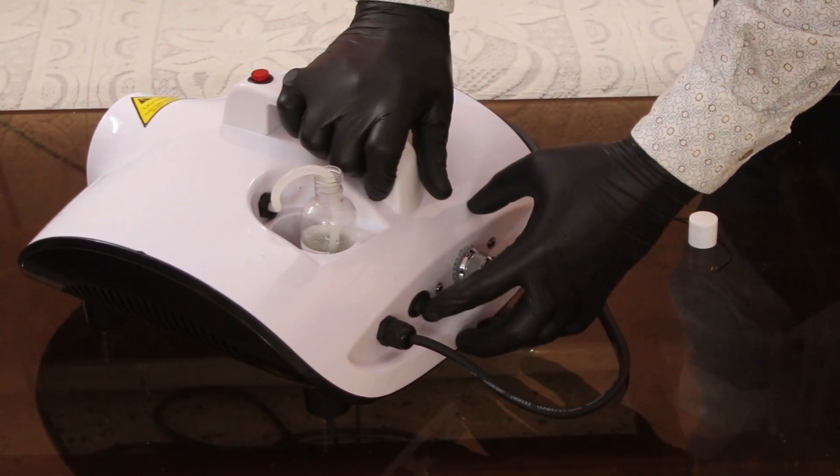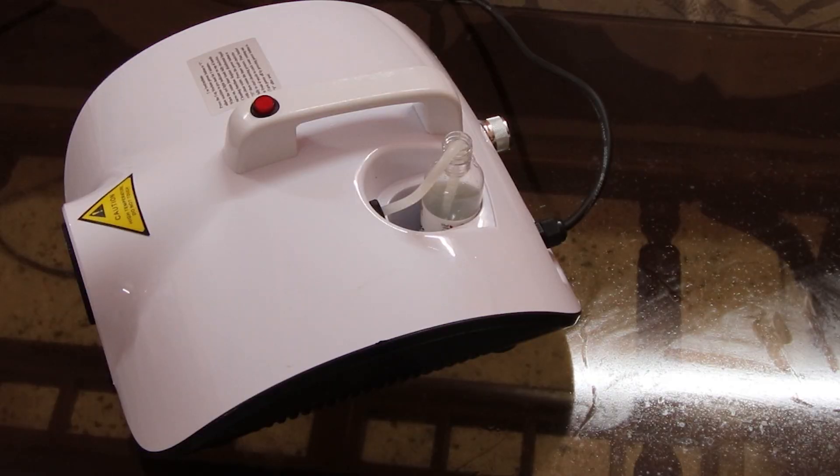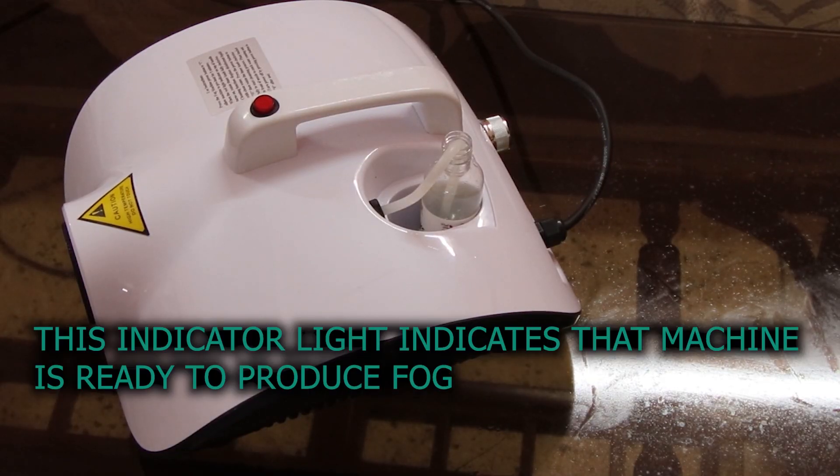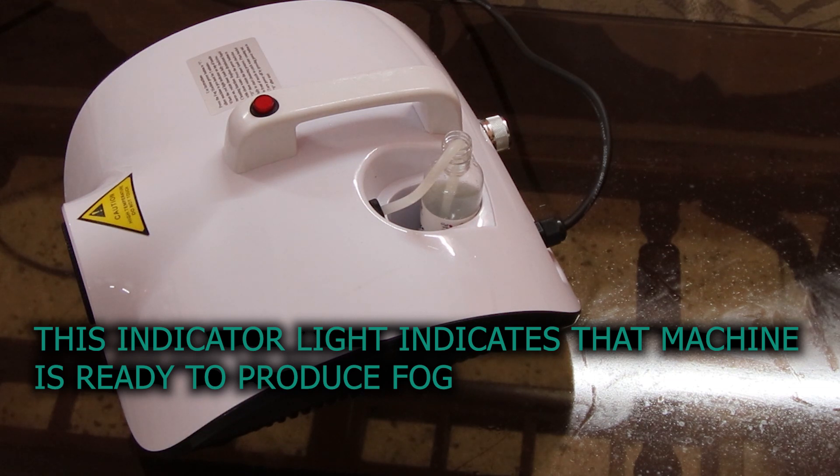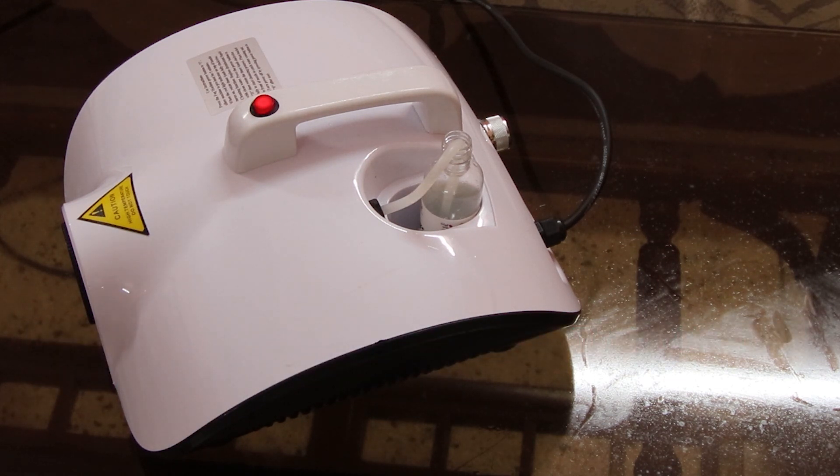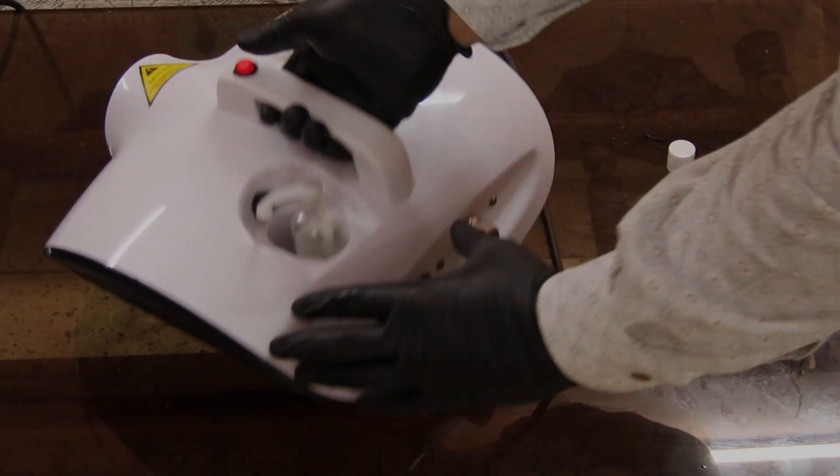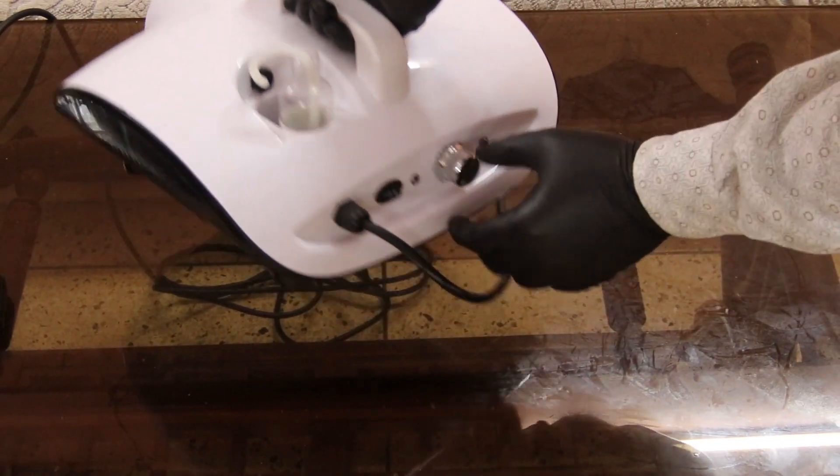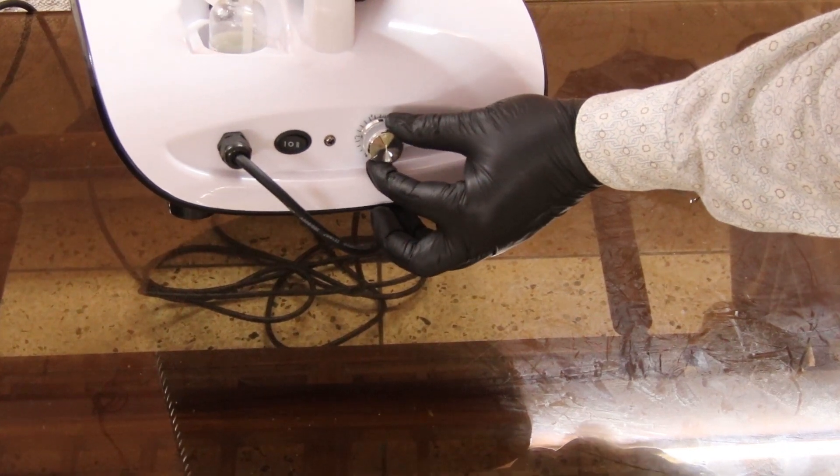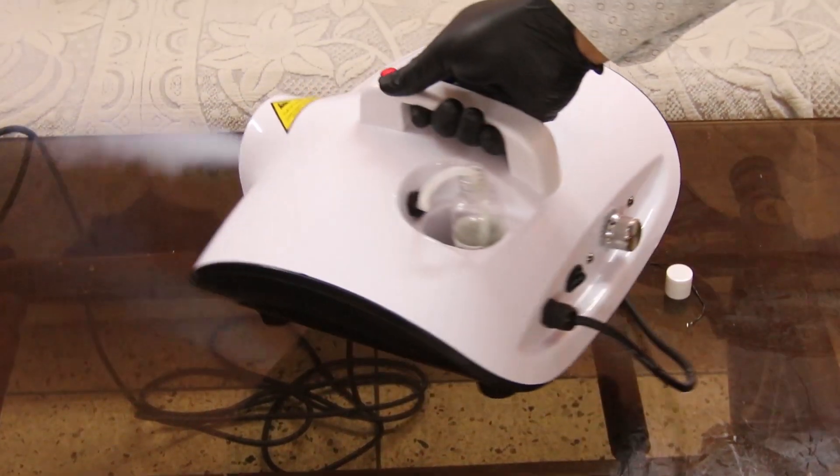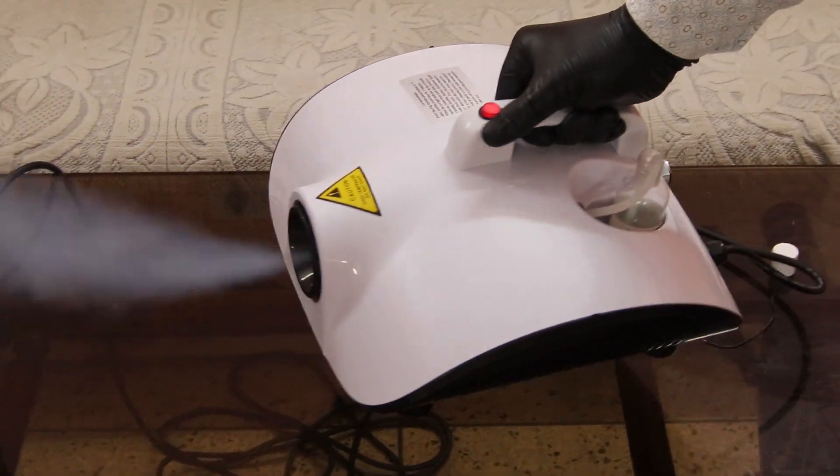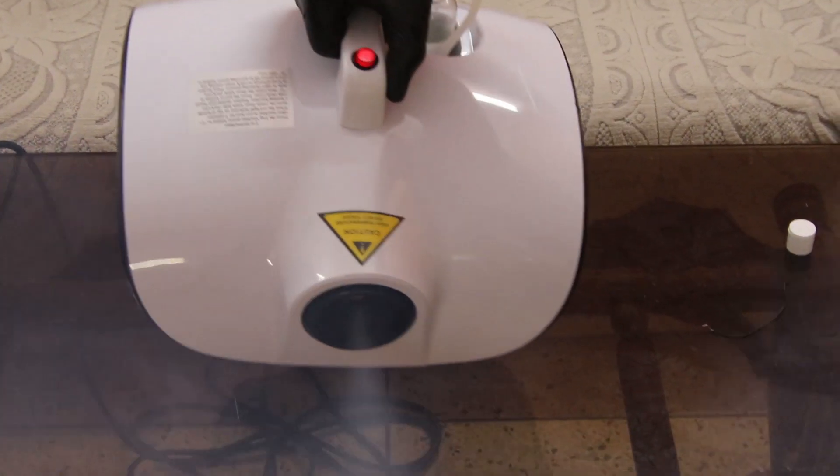Switch on this to the single side. Now you can just rotate this anti-clockwise, the timer, and this fogger machine will start and you can see the fog coming out of here.